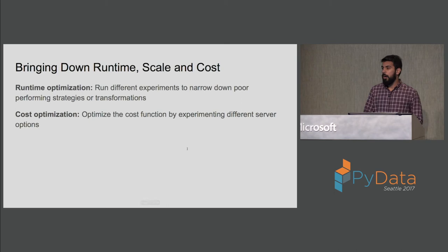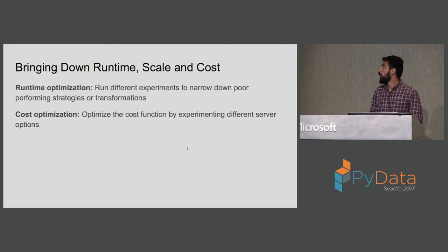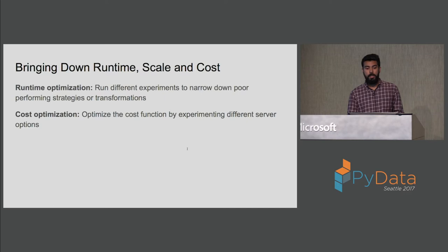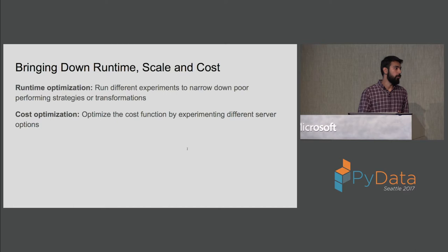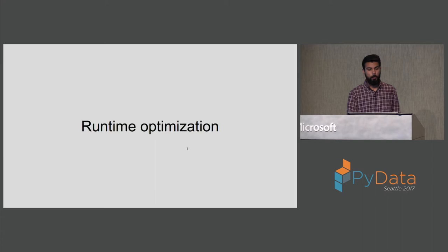Now let's see how we utilize all that information for our problem statement. Our problem is divided into two sub-goals: runtime optimization, in which we narrow down different strategies and transformations, and cost optimization, in which we use different hardware options to reduce costs for each pipeline run.